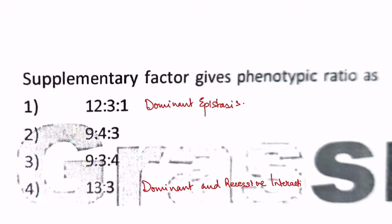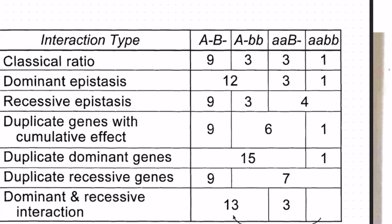And 9:3:4 shows recessive epistasis, which is supplementary factor. We will give a reference here: an example of recessive epistasis showing our ratio 9:3:4, and dominant epistasis showing 12:3:1.